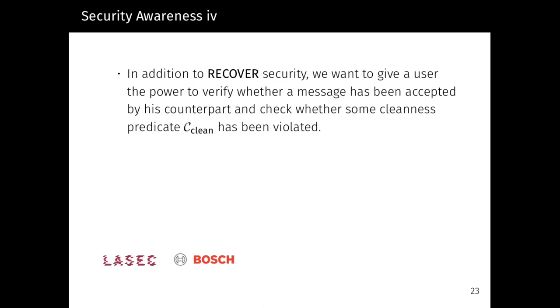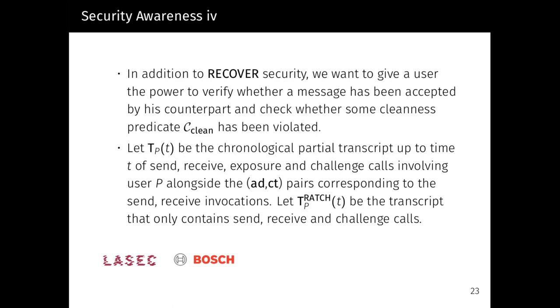In addition to r-RECOVER security, we want to give a user the power to verify whether a message has been accepted by his counterpart and check whether some cleanness predicate has been violated. For this, let T_P be the chronological partial transcript up to time T of send, receive, exposure, and challenge calls involving the user P alongside the ciphertext pairs corresponding to each send and receive invocation.